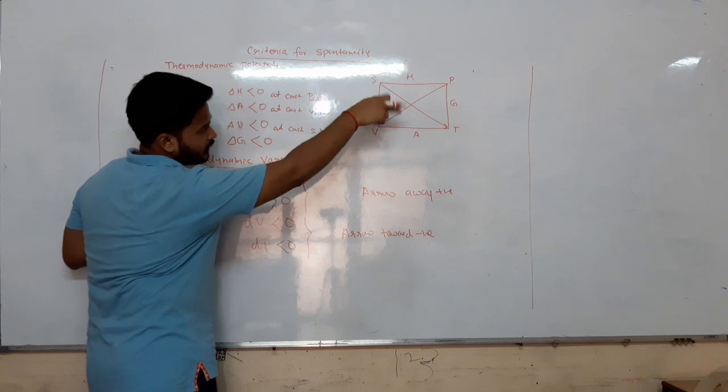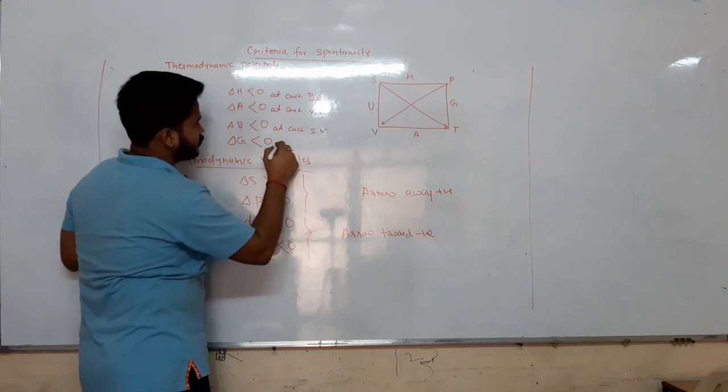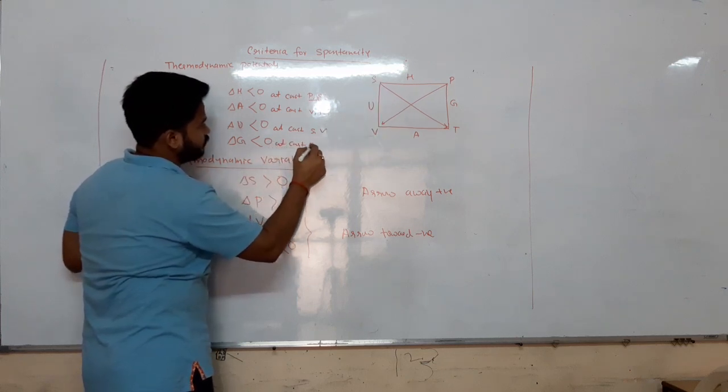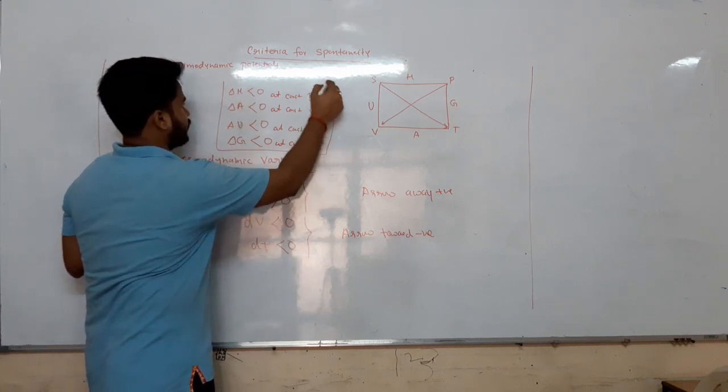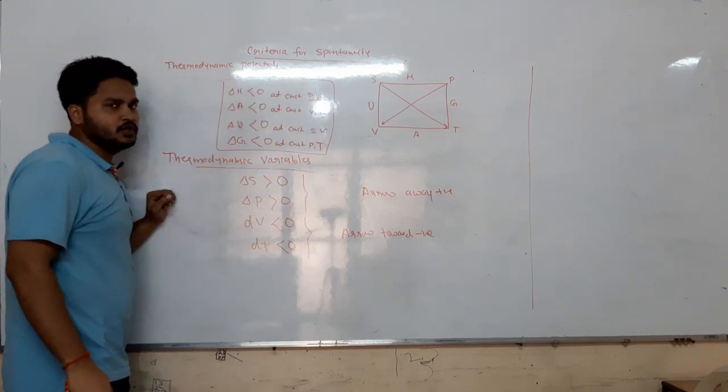Similarly, for G (Gibbs free energy), the variables are P and T. At constant P and T, delta G less than 0 is the condition for the thermodynamic potential to be spontaneous.